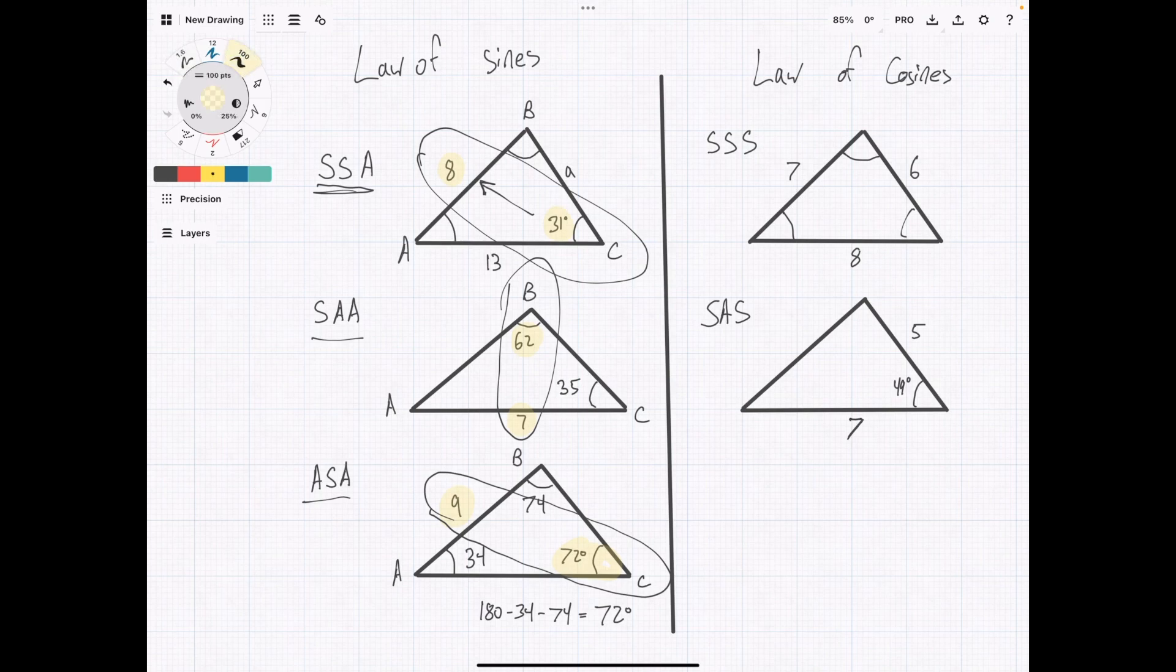Same thing goes for a side angle side problem. We have this angle, but we're missing this. We also have these two sides, but across from them, there's nothing. So there's no match. And again, you're going to need the law of cosines.